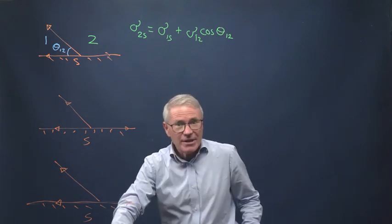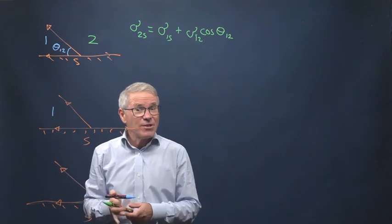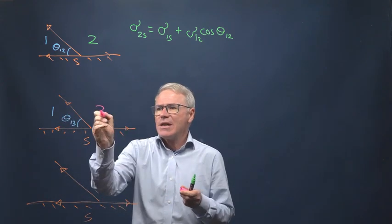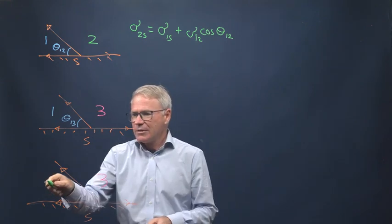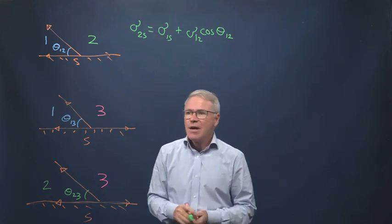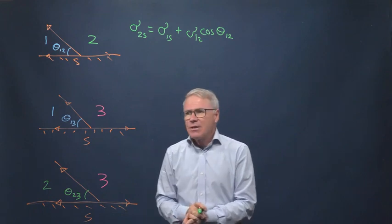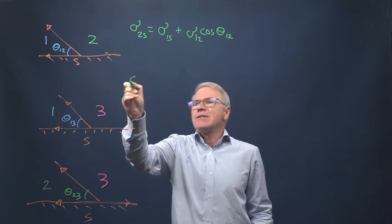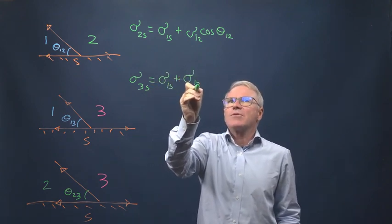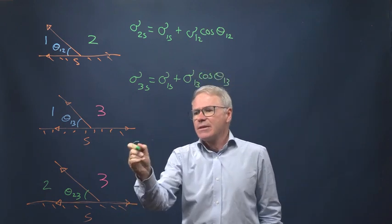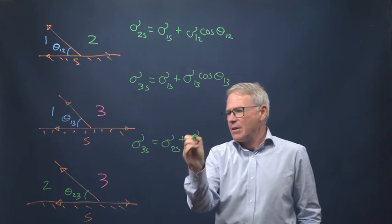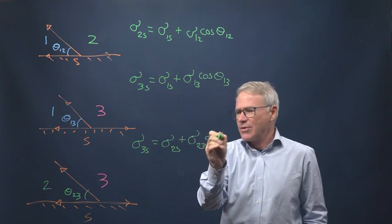But that's not the only possibility. We can have phase 1 in contact with phase 3, so this will be theta 1,3. And here we can have it between phase 2 and phase 3, sigma 2,3. In each case, I'm defining the contact angle as measured through the denser phase. So sigma 3s equals sigma 1s plus sigma 1,3 cos theta 1,3. And this one is sigma 3s equals sigma 2s plus sigma 2,3 cos theta 2,3.